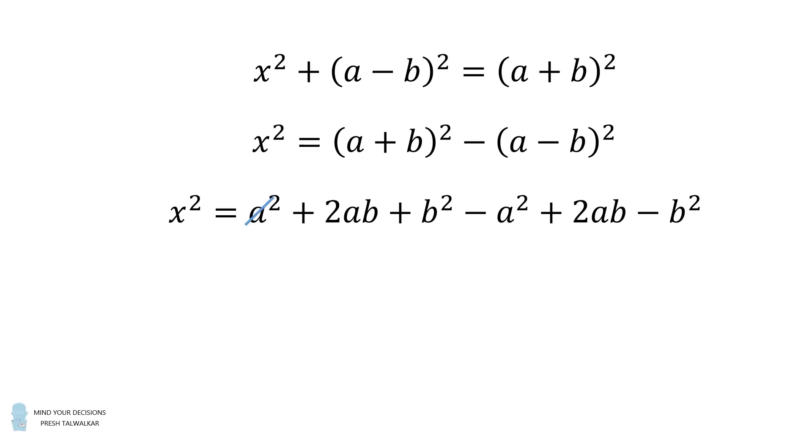The a squared terms will cancel, and the b squared terms will cancel. Then we have 2ab plus 2ab, so that'll be equal to 4ab. We take the square root of both sides.